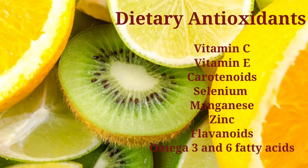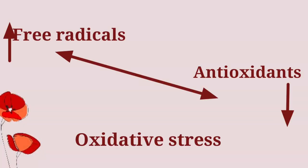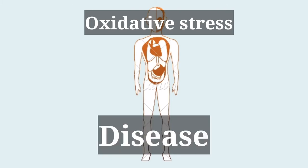The exogenous antioxidants we get from our diet include vitamin C, vitamin E, carotenoids, minerals like selenium, manganese, and zinc, flavonoids, and omega-3 and omega-6 fatty acids, to name a few. Whenever the free radical load is much more than the antioxidants can handle, oxidative stress occurs in our body, leading to inflammation and disease.